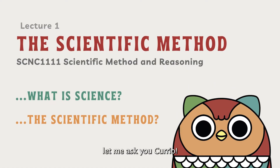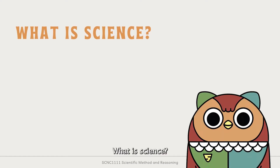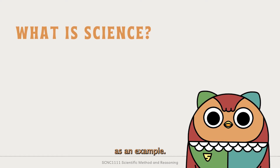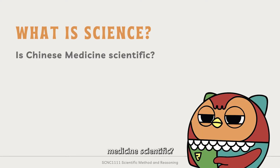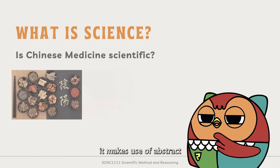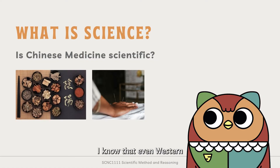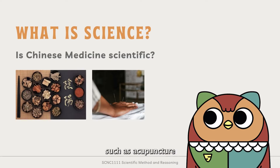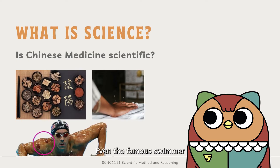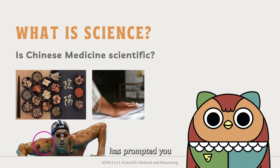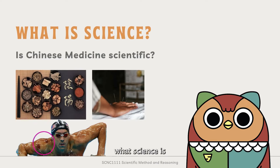So to begin, let me ask you Curio, what is science? Let's use Chinese medicine as an example. Is Chinese medicine scientific? Well, it makes use of abstract principles like yin and yang which can be quite difficult to understand. I know that even Western medical doctors have witnessed the positive effects of Chinese medicine treatments such as acupuncture and cupping. Even the famous swimmer Michael Phelps uses cupping. Hopefully, thinking about this question has prompted you to think more about what science is. We must first be clear on what science is before we can judge whether a certain subject is scientific.